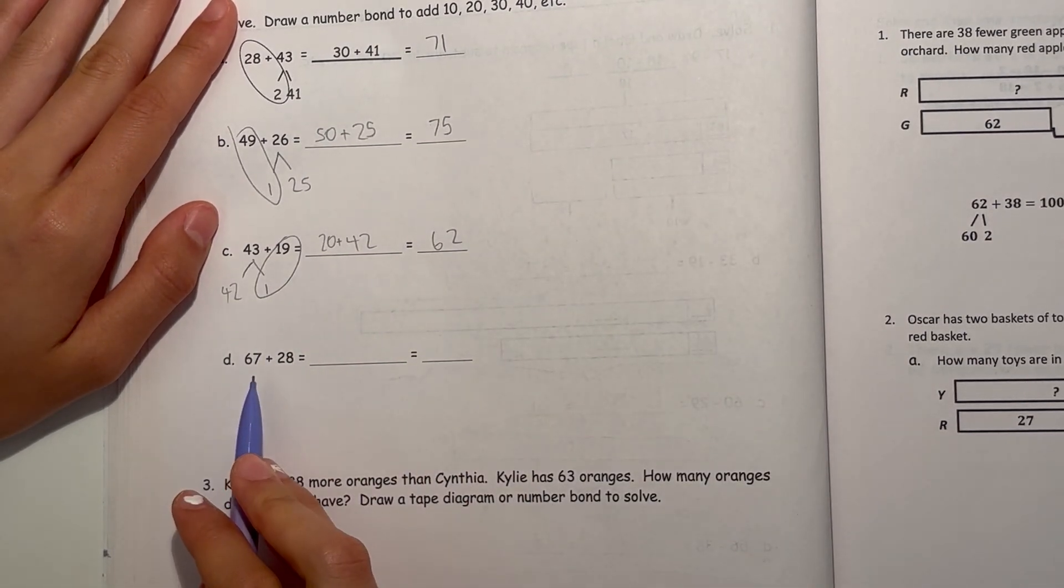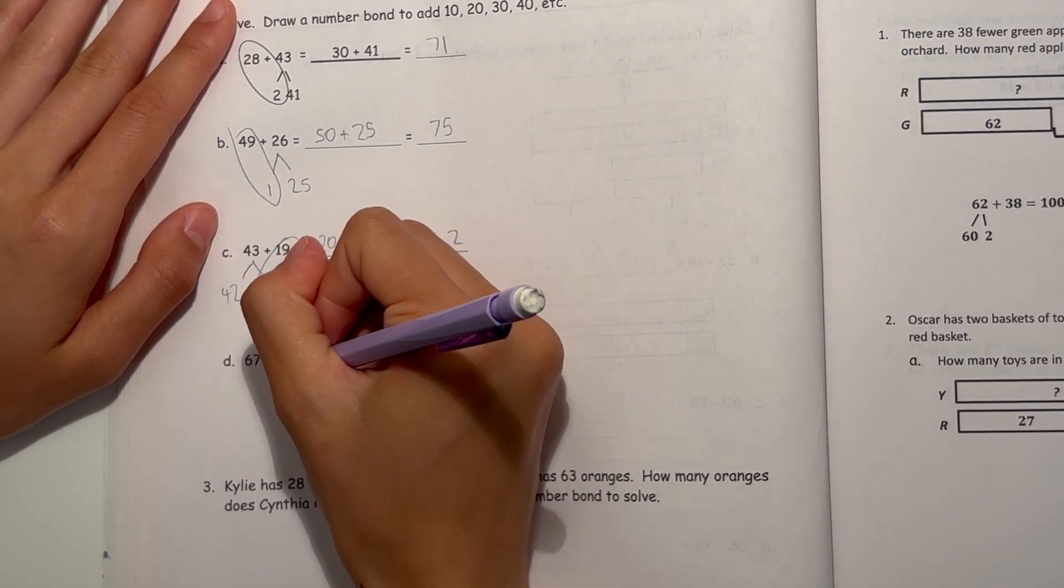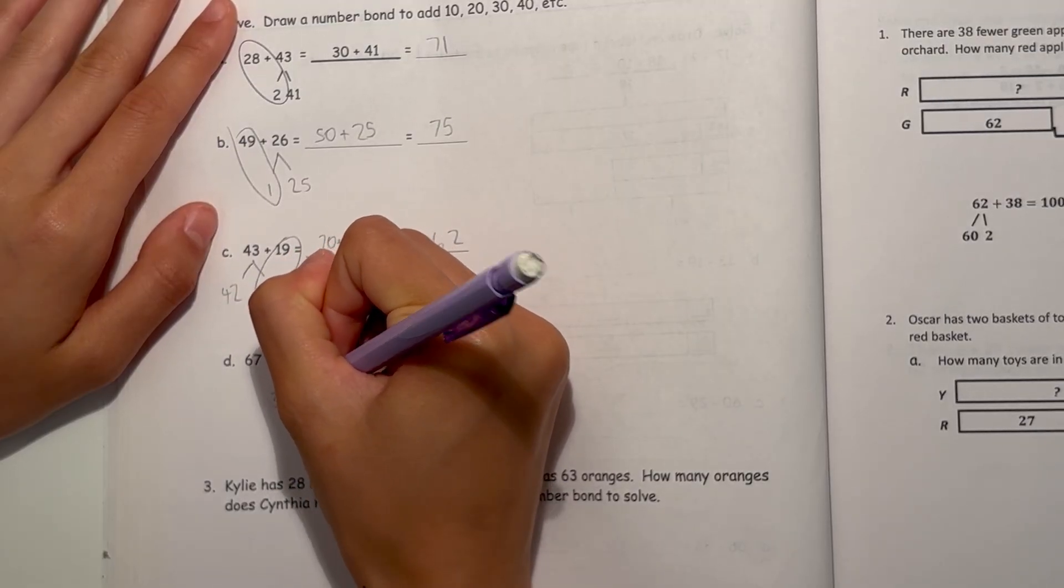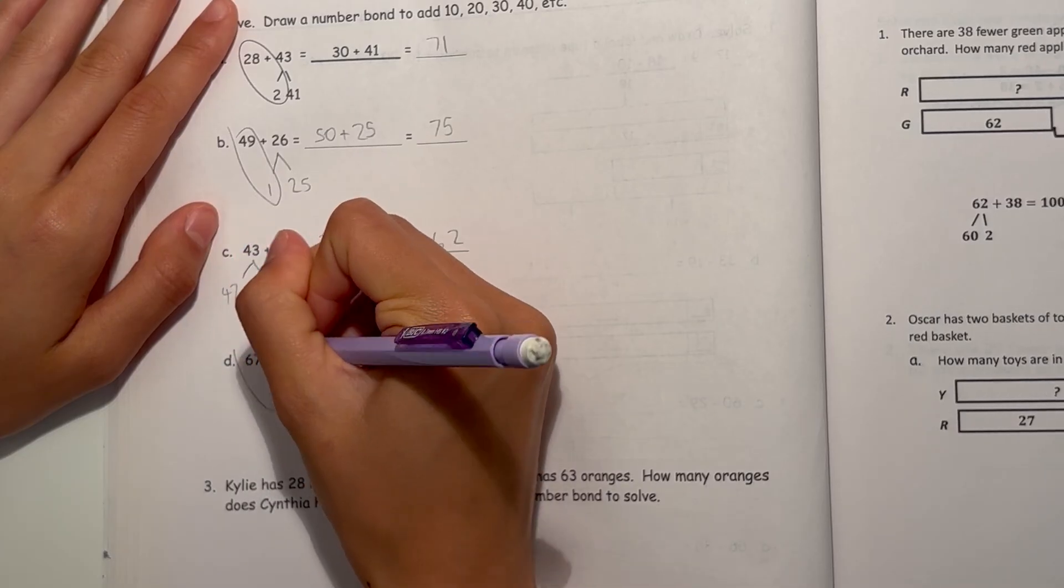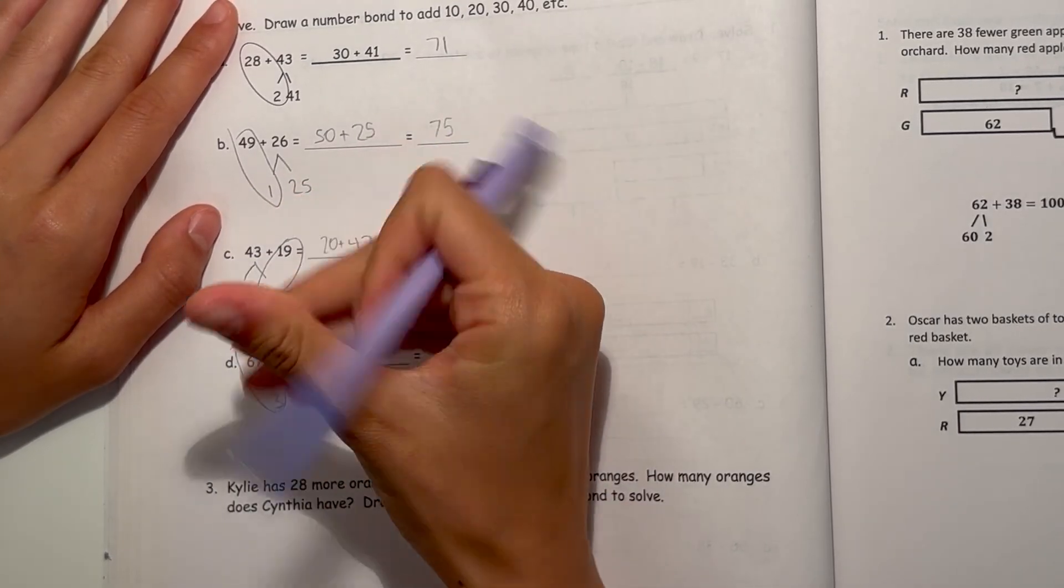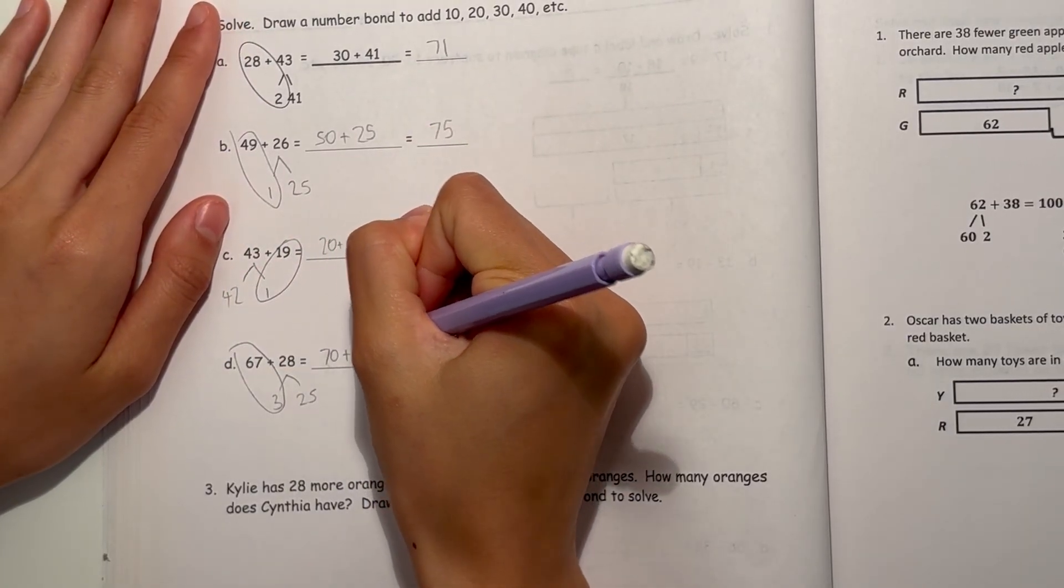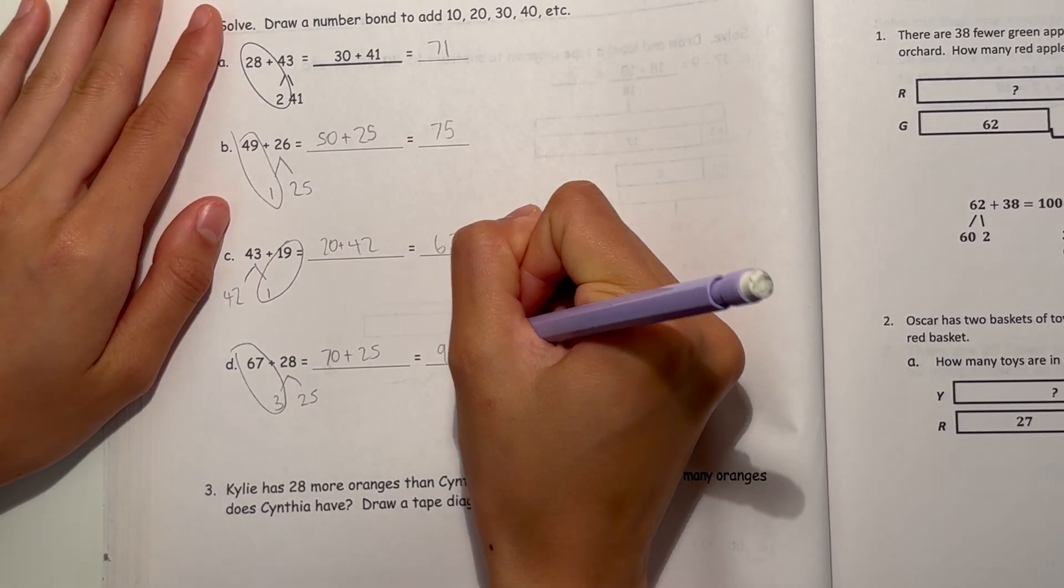And now for D, 67 plus 28. Take out 3, that gives us 25 left. Group this together, you get, not 80, 70 plus 25, which is 95.